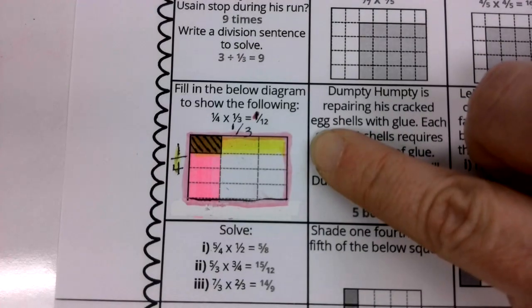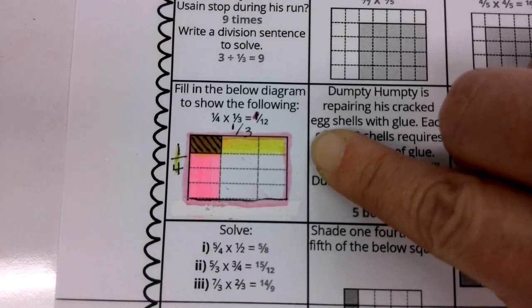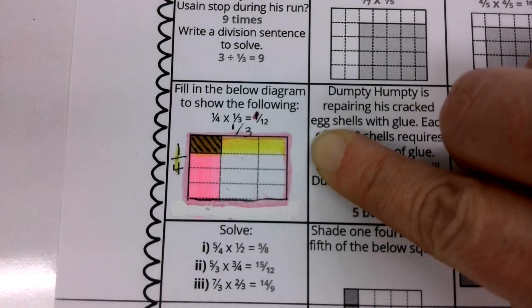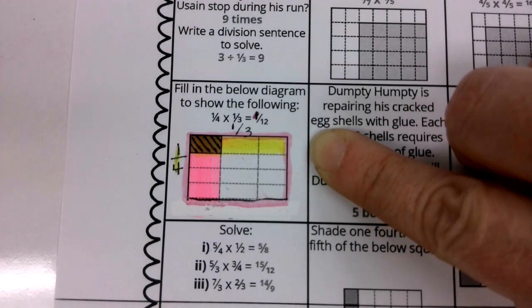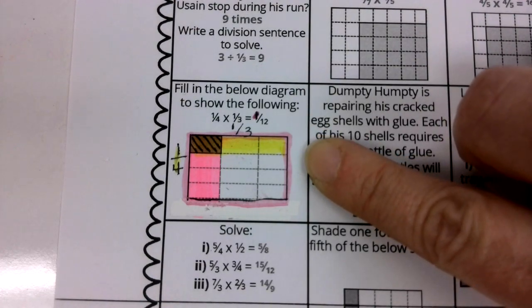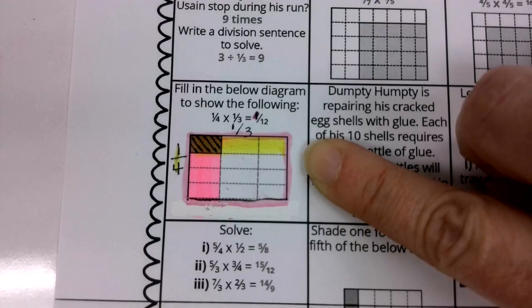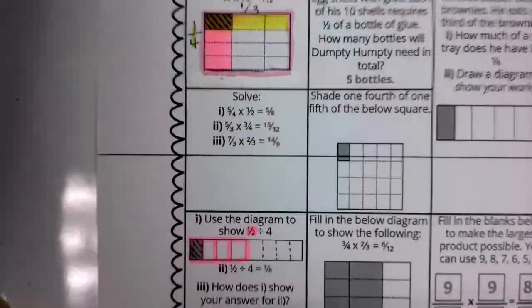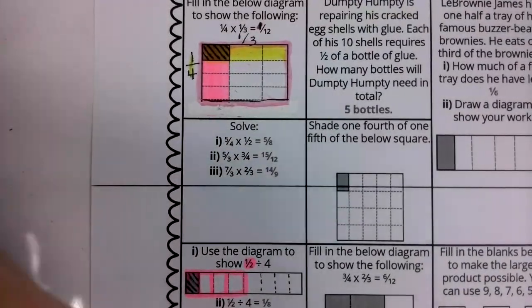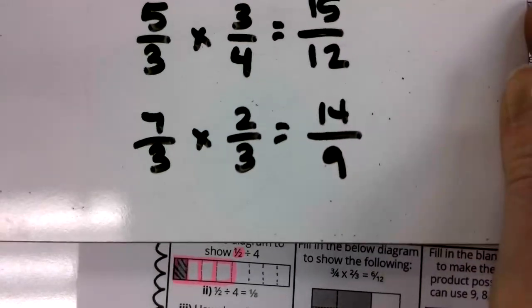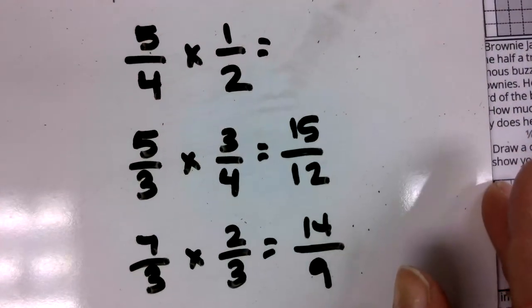Now, this was a way to model proper fraction times proper fraction. This is not the most efficient way to do it, but this is a strategy just for modeling what is occurring when we multiply a proper fraction times a proper fraction. We also know the algorithm or a way to show it with equations. And that's what our next question is helping us with.